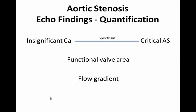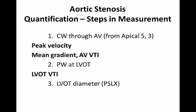This disease exists along a spectrum from significant calcification all the way up to critical aortic stenosis. Most patients won't have symptoms until they're closer to the severe end of the spectrum. What you want to figure out from echo are the functional valve area and the flow gradient across the valve. It's really three steps in measurement — and I'm going to try to make it easy for you. The first thing I do is continuous wave through the aortic valve, usually from an apical five or apical three chamber view.